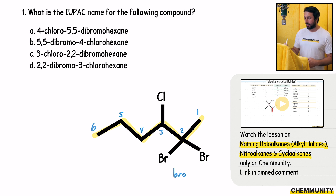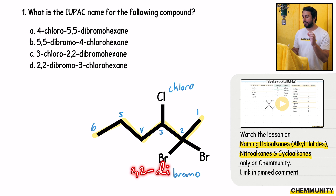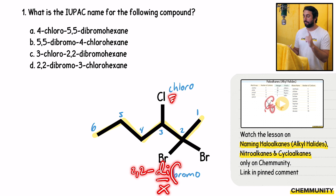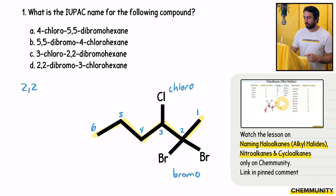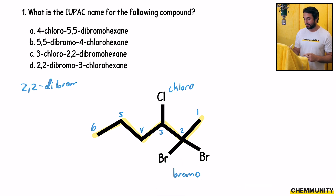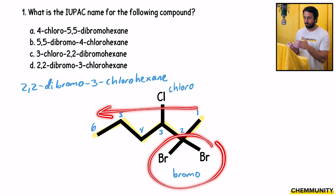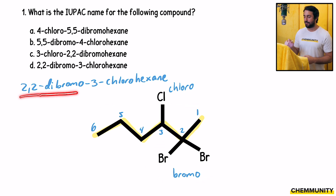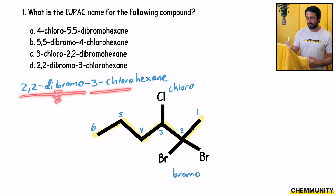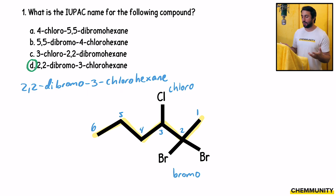We have three substituents and we're going to name them in alphabetical order. So we have bromo before chloro. Now remember, even though it is going to be 2,2-dibromo, that prefix 'di' does not mean it comes before C for chloro — it's still B for bromo. So we have 2,2-dibromo — that's the part that comes first — then we have 3-chloro and then hexane. The answer is 2,2-dibromo-3-chlorohexane.